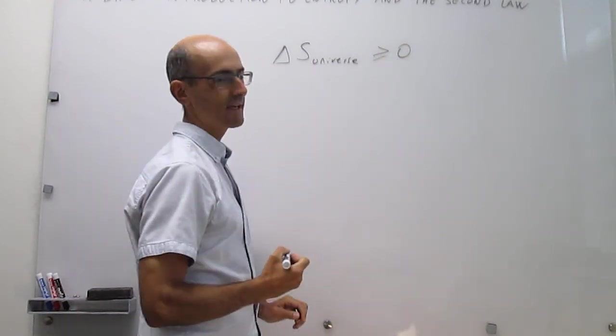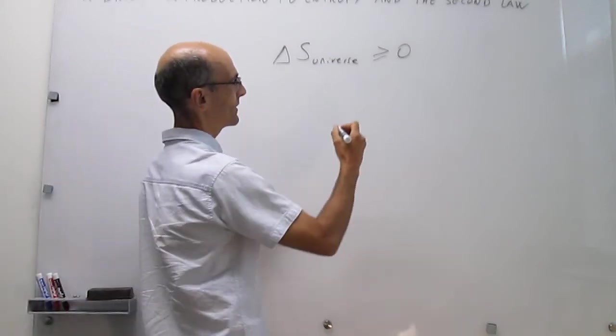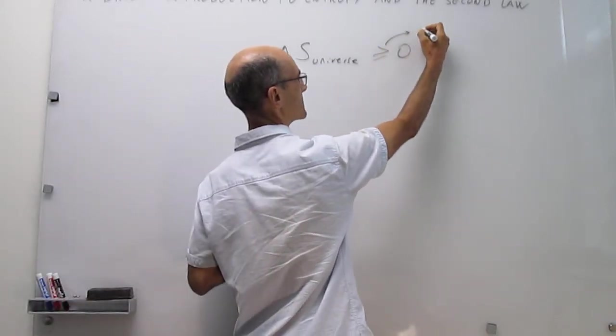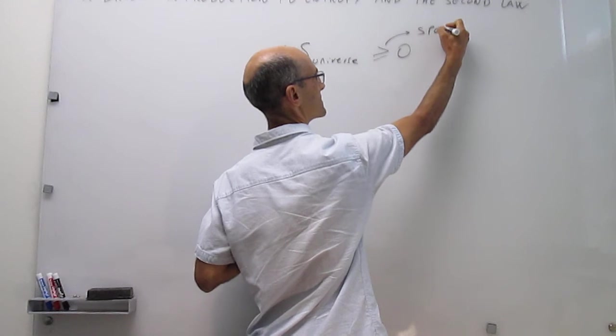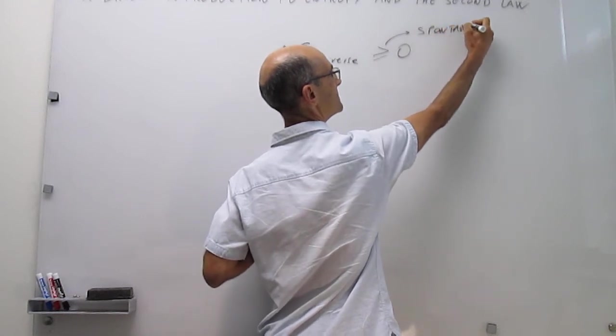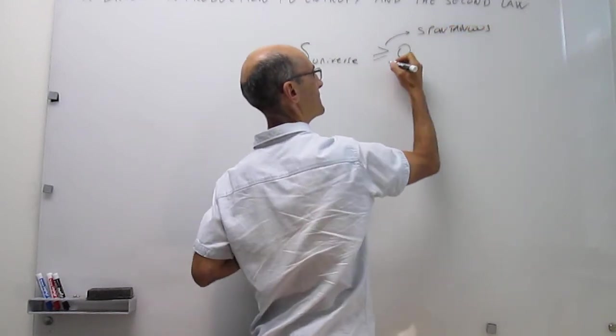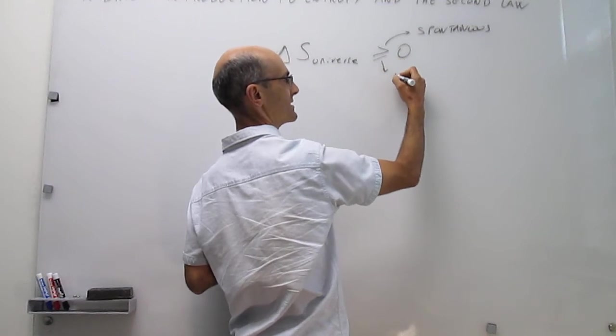And there's actually a second statement of the second law in which there's some conditions in which the entropy of the universe can be equal to zero. So if it's larger than zero, then we'll say that the process is spontaneous. And if it's equal to zero, we'll say that the process is at equilibrium.